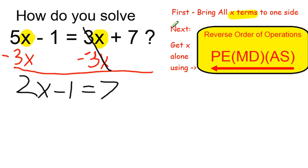Now in order to get the x alone, I'm going to undo what's done to x using the reverse order of operations.